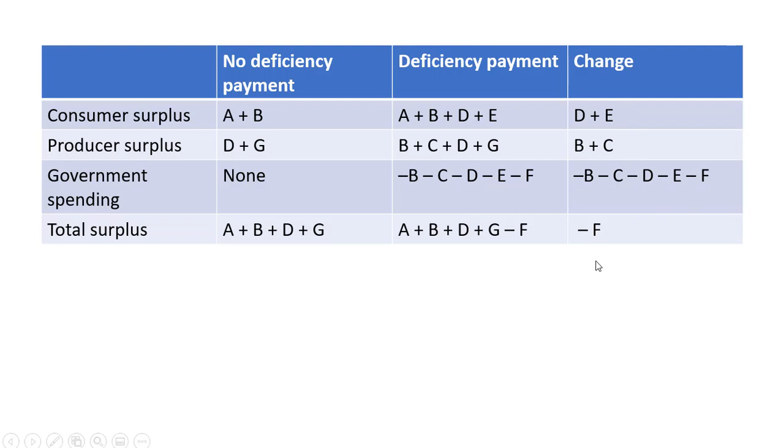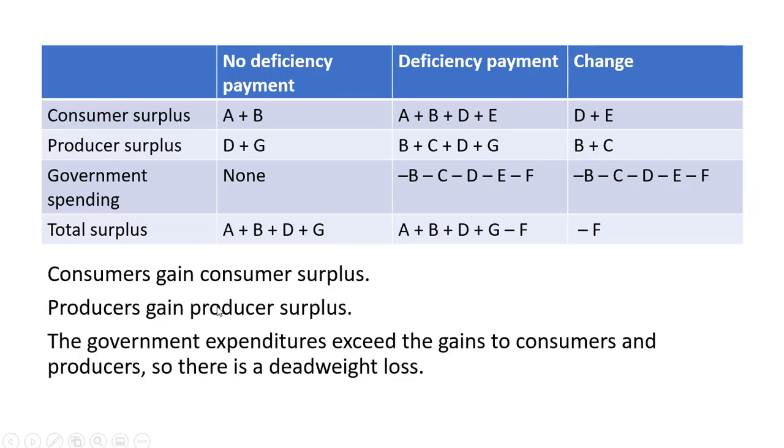So there is a deadweight loss or an inefficiency attributable to this deficiency payment price floor. So to sum up, yes, consumers gain, yes, producers gain. However, the government expenditures, the losses to the government, exceed the gains to consumers and producers collectively. So there is an inefficiency or a deadweight loss. Okay, I'll stop here.